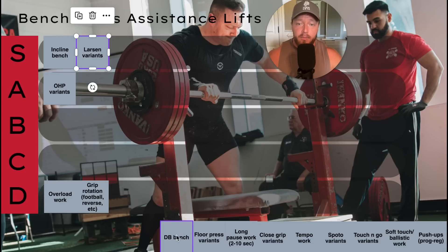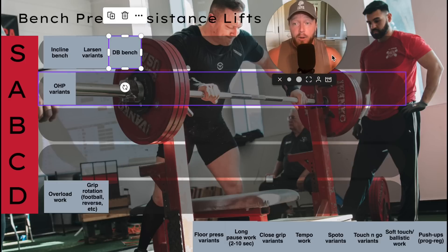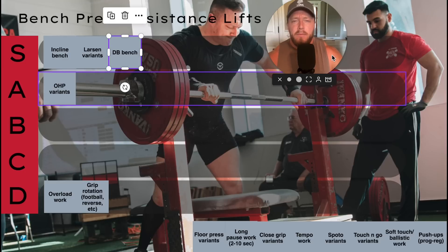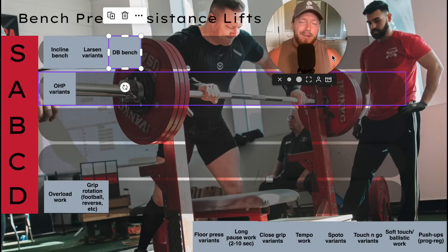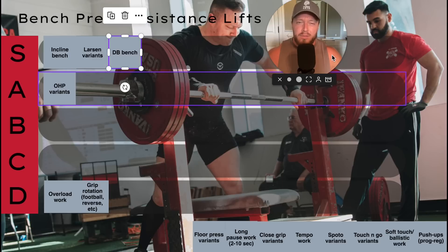Dumbbell bench — another S tier. I think people would put this maybe at A or B, but I know my bench press and I think anyone with long arms got the most results from dumbbell benching. I've done up to 160-pound dumbbells for paused reps — I think paused fours — and six reps with the 150s and 155s. I got really strong on dumbbell benching, and I'm talking full lockout, strict pausing — not that half-range, tapping on the chest, false lockout stuff.